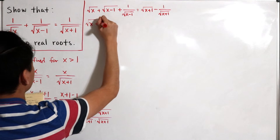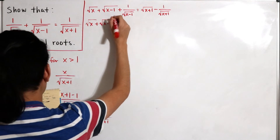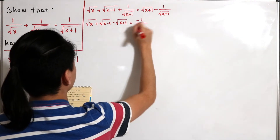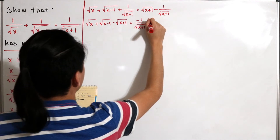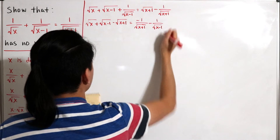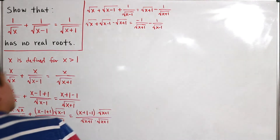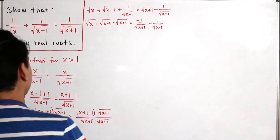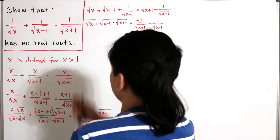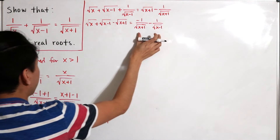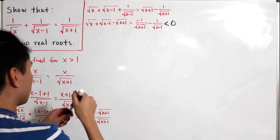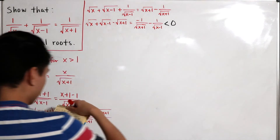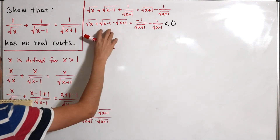Doing so, we have: x plus the square root of x minus 1, minus the square root of x plus 1, equal to negative 1 divided by the square root of x plus 1, minus 1 divided by the square root of x minus 1. A key observation: for all x strictly greater than 1, the right-hand side is clearly a negative number — strictly less than zero.